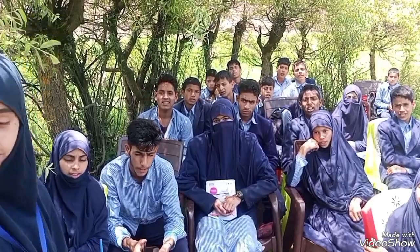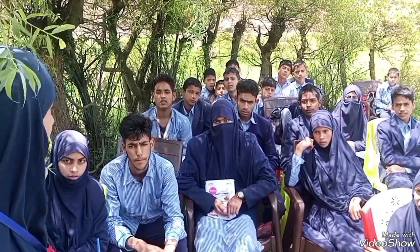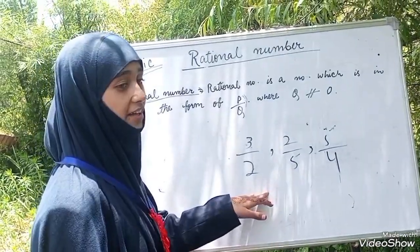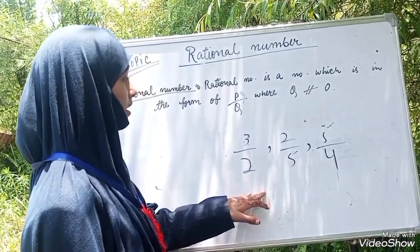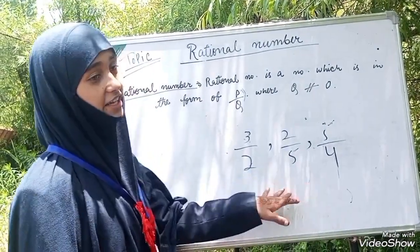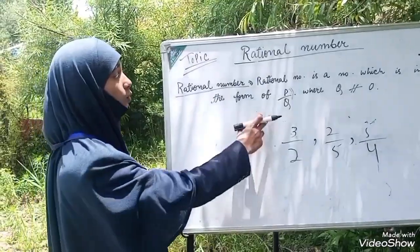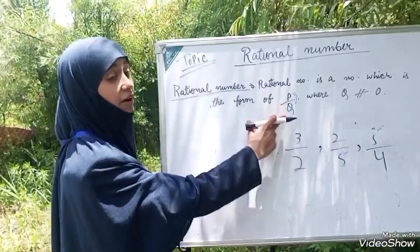For example, three by two is a rational number, two by five is a rational number, five by four is a rational number. All these numbers are rational numbers.